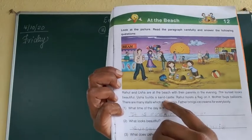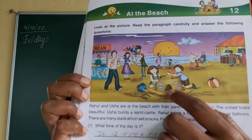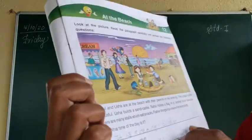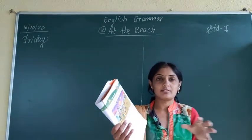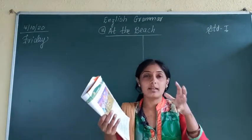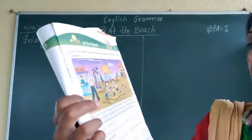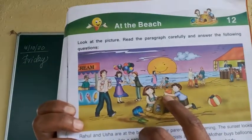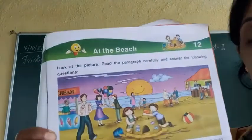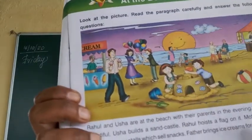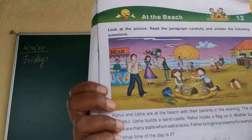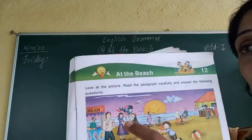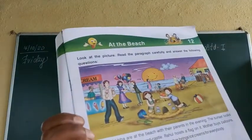Usha builds a sand castle — this is a sand castle. Rahul hoists a flag on it — Rahul puts a flag on top of the sand castle. Mother buys balloons — mother is buying balloons for Rahul and Usha.